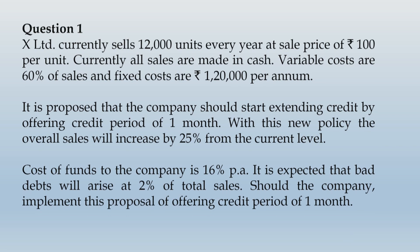Now we have to analyze this whole situation. We start with the current sales quantity of 12,000 units. The first benefit of providing 1 month credit is that sales will increase by 25 percent. 25 percent of 12,000 units is 3,000 units. So with the proposed policy you will sell 3,000 additional units on top of the current 12,000 units, making proposed sales volume 15,000 units.